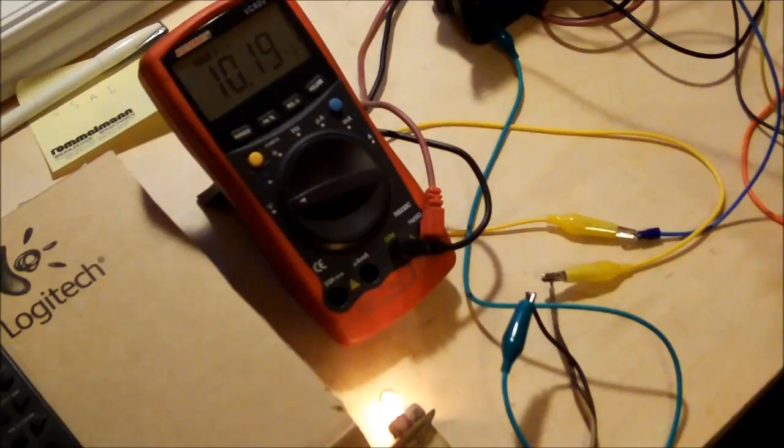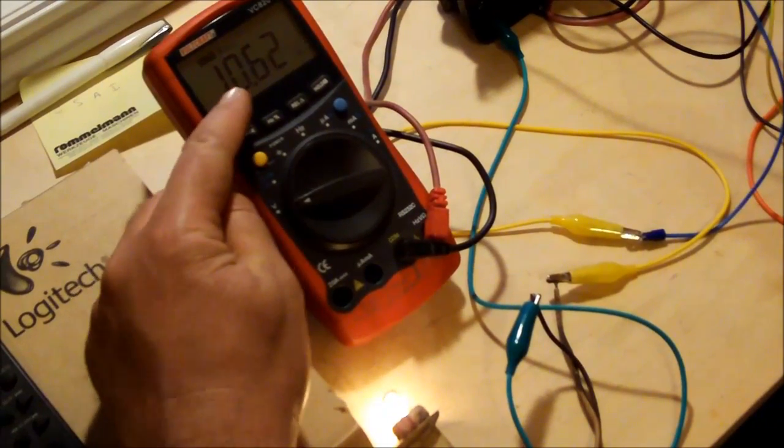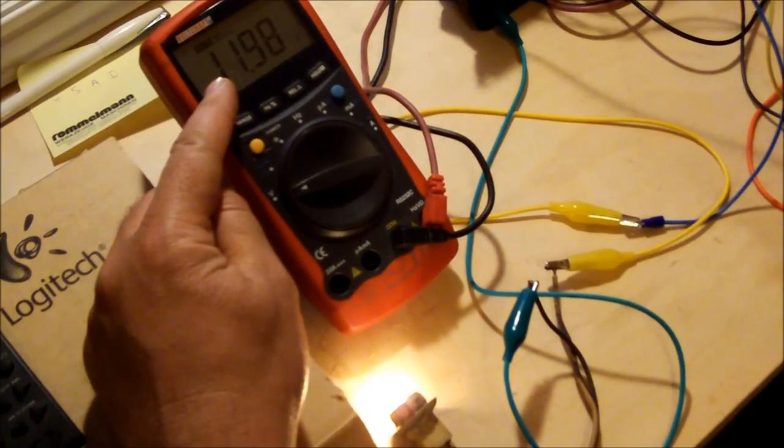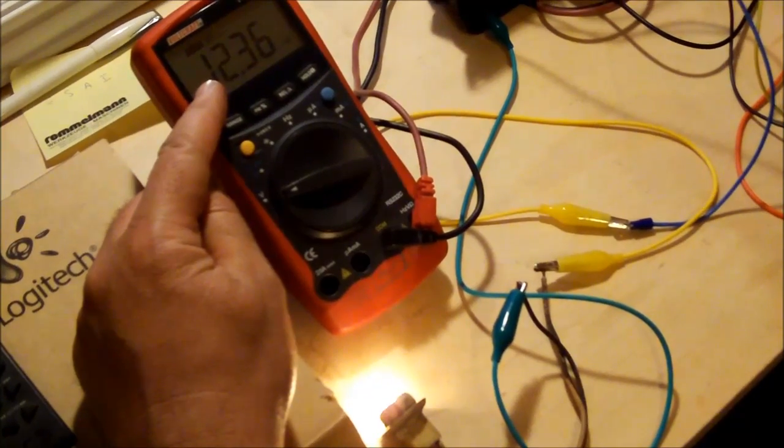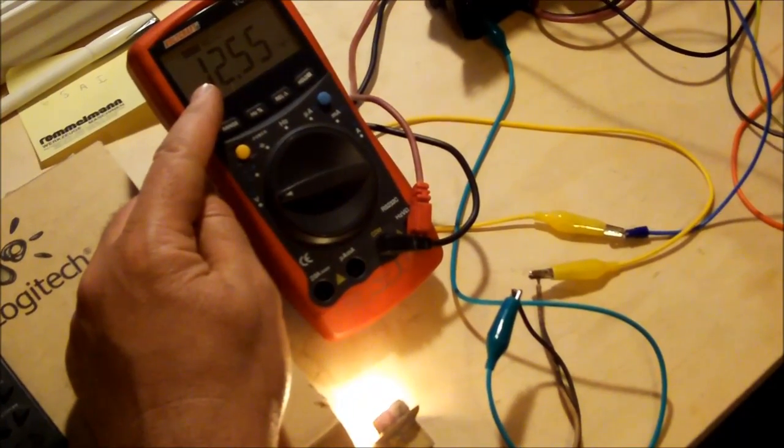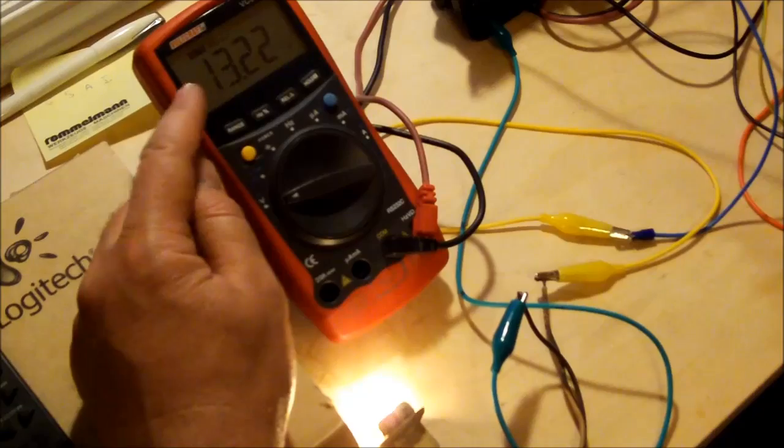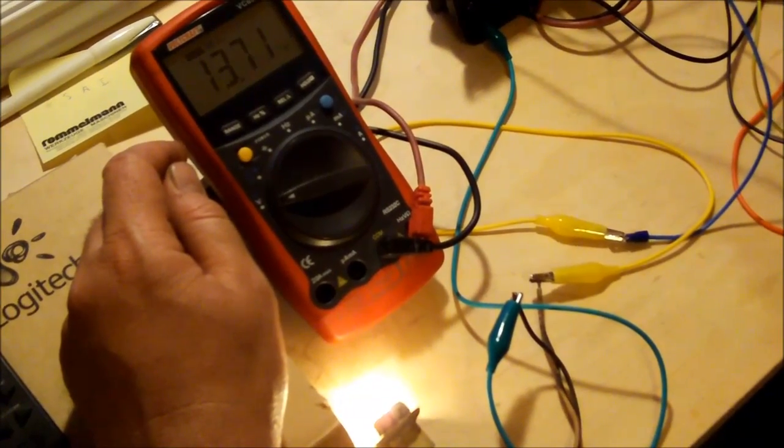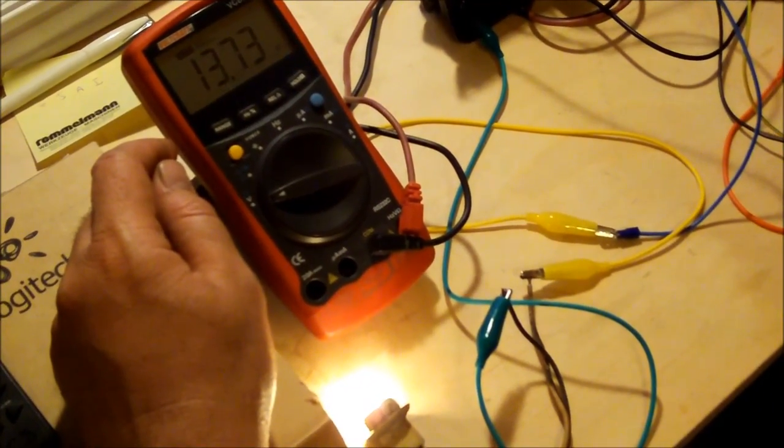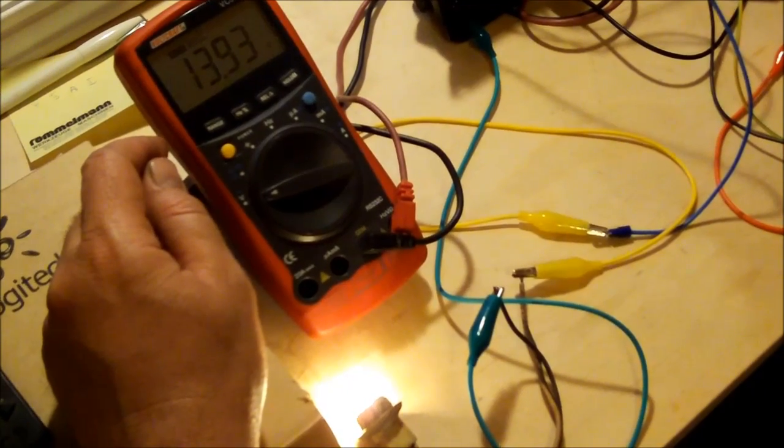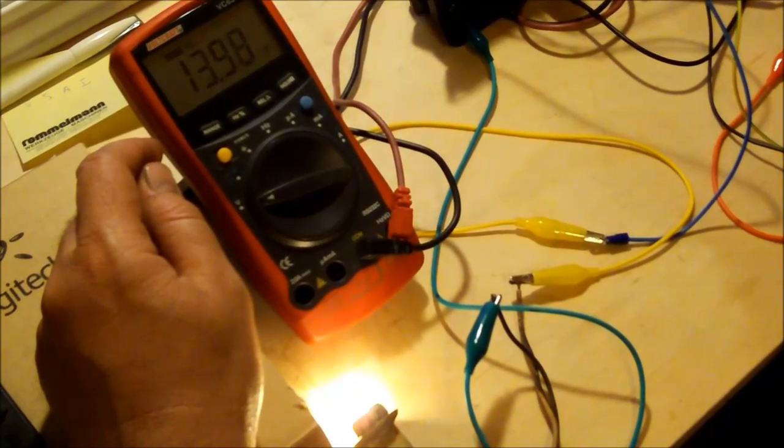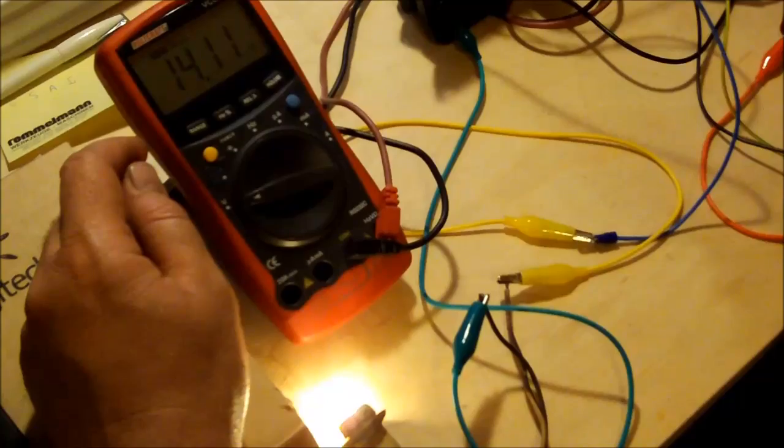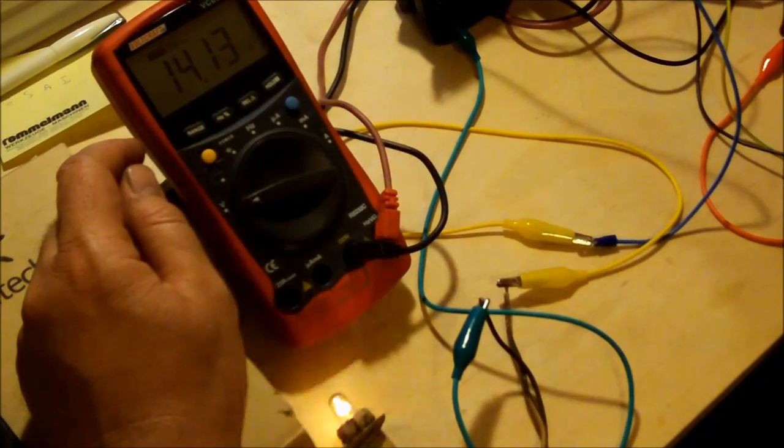Now we go up to 12 volt. Nothing happens. 13 volts and this regulator should switch off the field coil at approximately 14 or 14.5 volt. Okay.